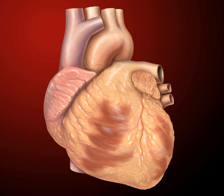An adult heart has a mass of 250–350 grams. The heart is often described as the size of a fist, 12 cm in length, 8 cm wide, and 6 cm in thickness, although this description is disputed, as the heart is likely to be slightly larger.